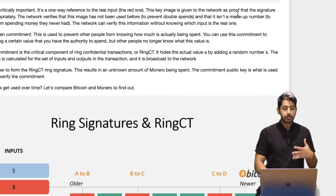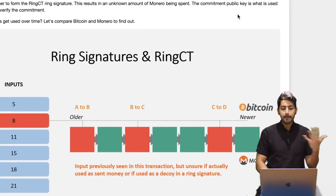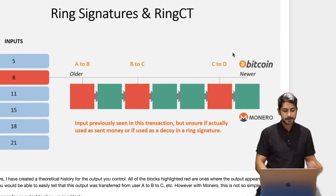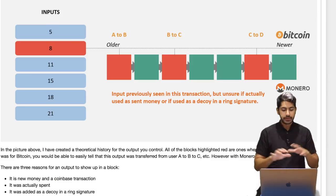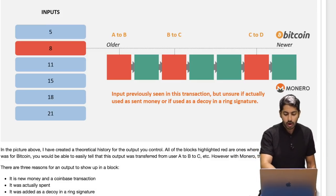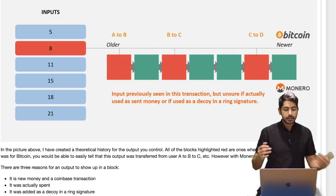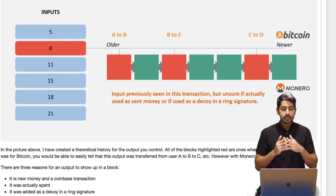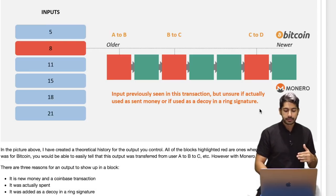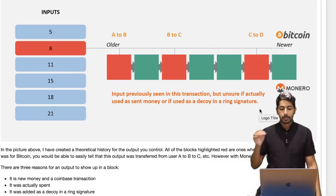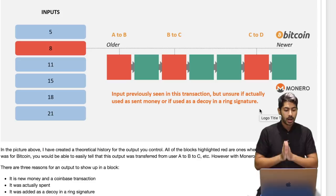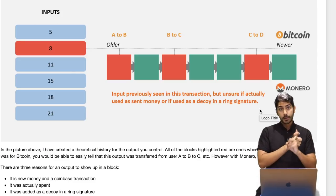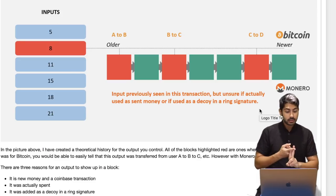How do outputs get used over time? In a theoretical history of outputs, all blocks highlighted red are ones where the output appears. If this were Bitcoin, we could easily tell that an output was transferred from user A to B to C. But with Monero, it's not so simple. There are three reasons an output might show up in a block: it's new money in a coinbase transaction, it was actually spent, or it was added as a decoy in a ring signature.